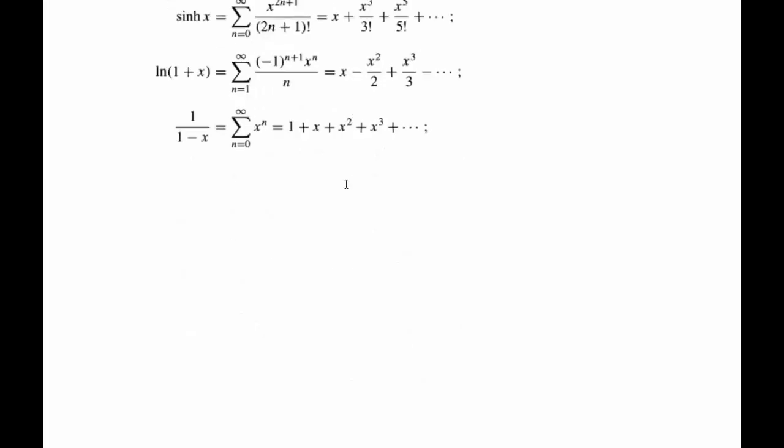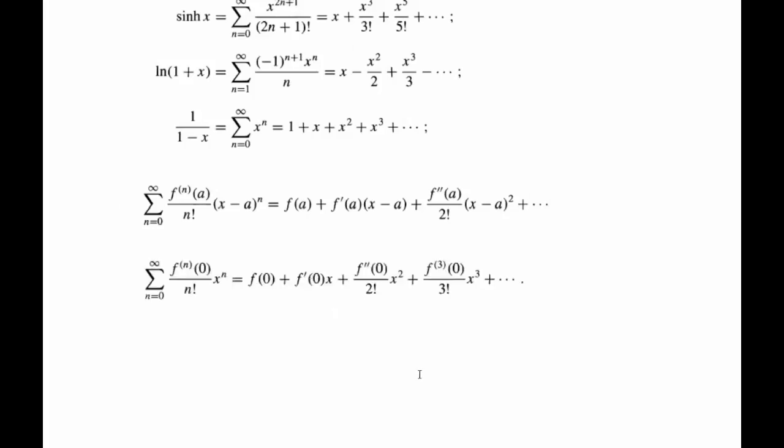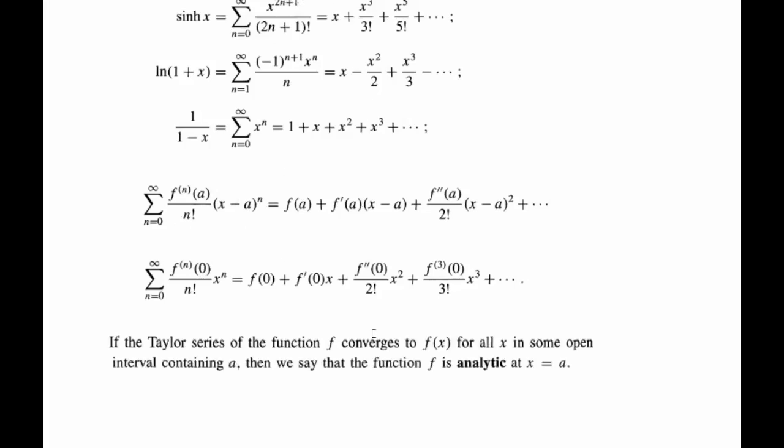Just to help you recall, the Taylor series looks like this—around the point x equals a—and the Maclaurin series, there we have it. You'll see the difference: this is a series in x, this is a series in (x minus a) around point a.